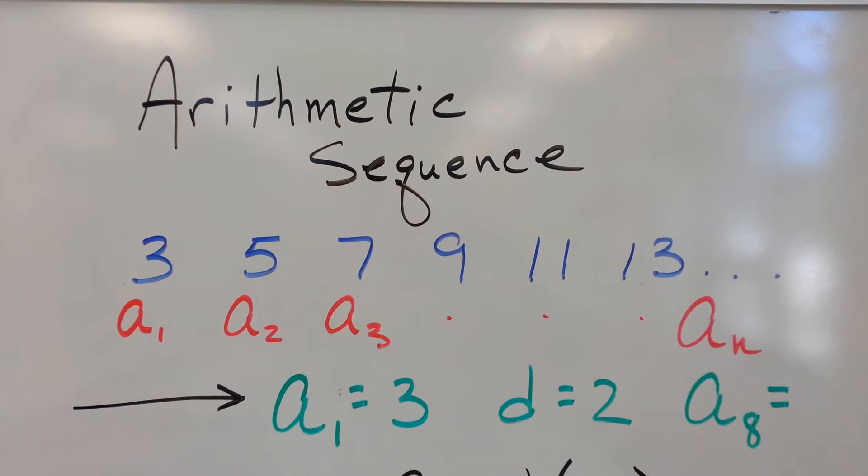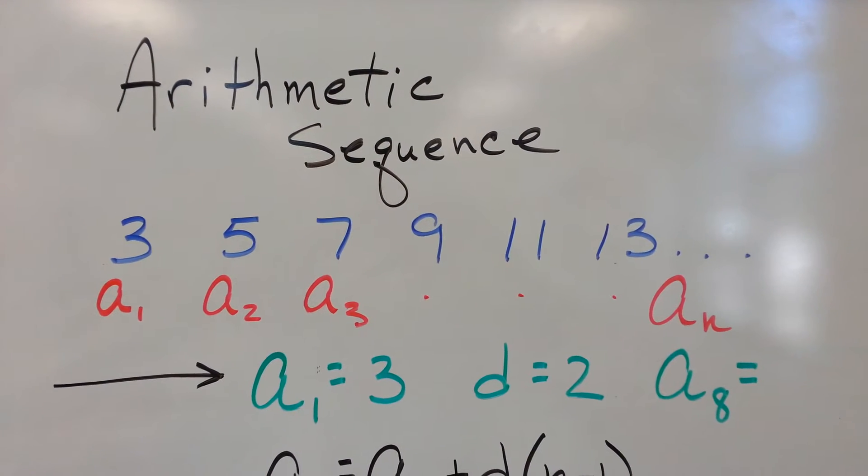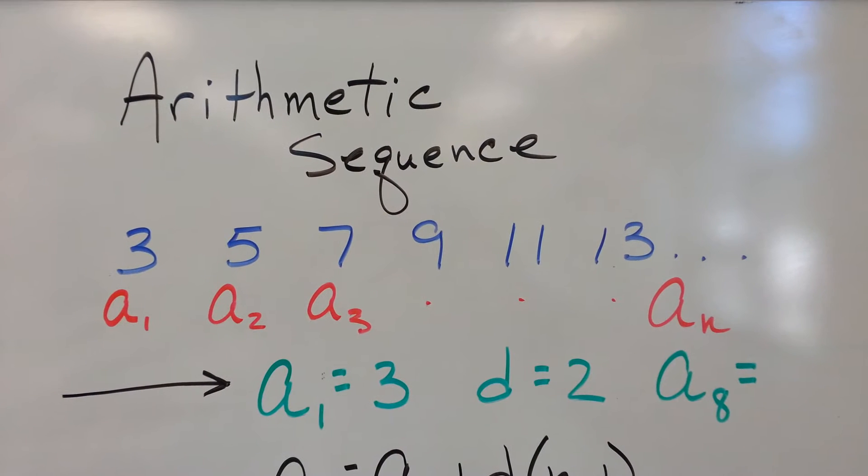And what we're really talking about is things that are linear. So if you look in blue, I've got a sequence going there: 3, 5, 7, 9, 11, 13.